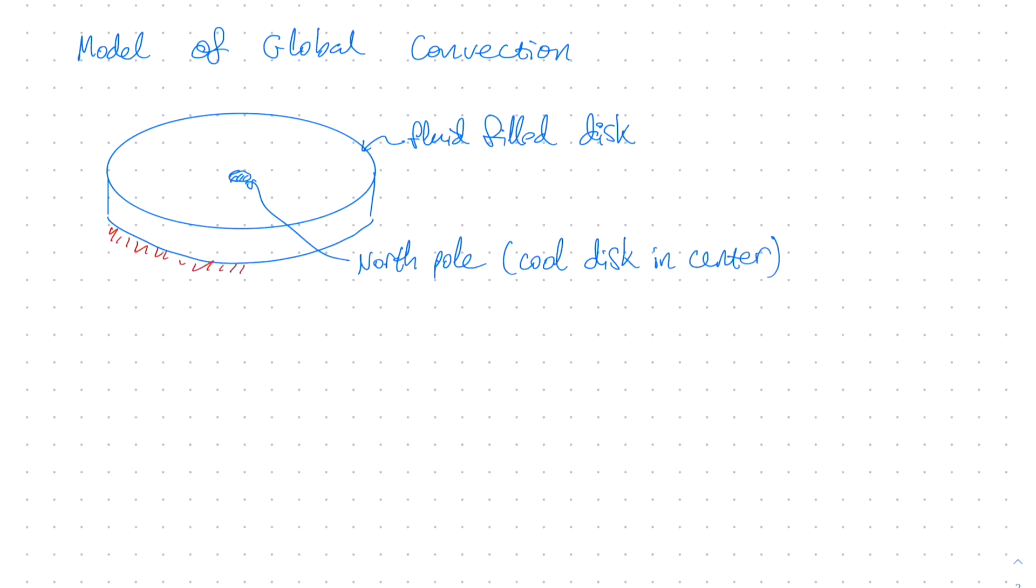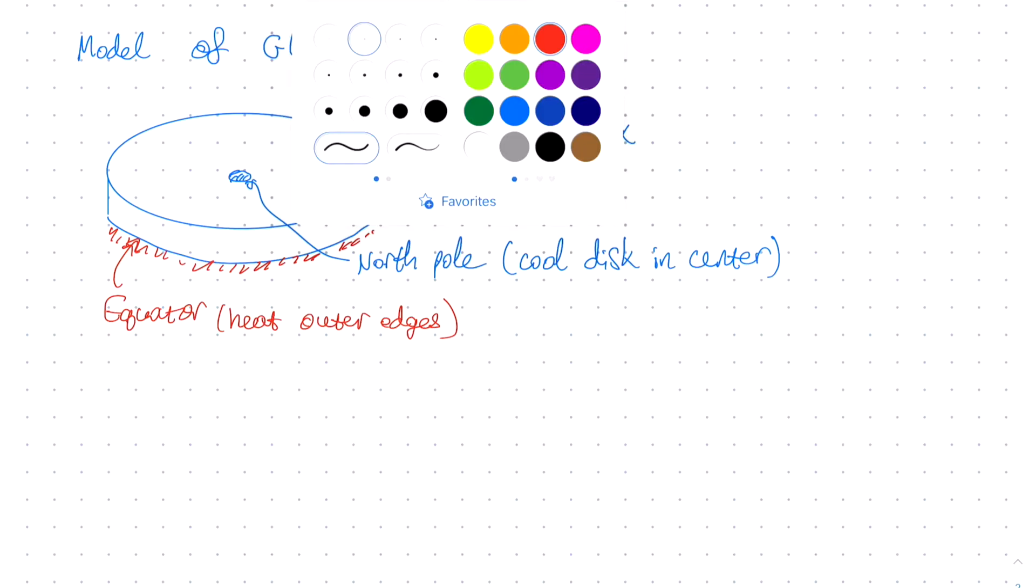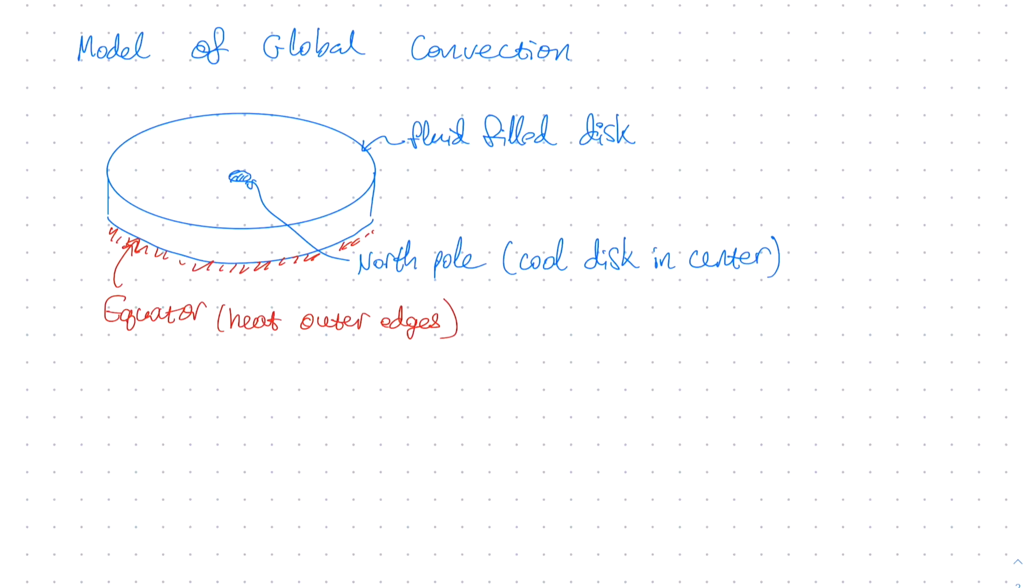To make this more relatable and easier to draw, instead of looking at global convection and circulation, let's look at a model of it. For a model, imagine that we have a Petri dish or some other kind of cylindrical dish, which is pretty shallow and filled with some sort of fluid like water. In order to simulate differential heating, under the disk we are going to place some elements. In the middle, we are going to place a cold element, for example, a little pack of ice. The ice pack simulates the lack of heating by the sun near the north pole of the Earth. What do we do with the outer edges of the disk? On the outside rim of the disk, that is supposed to be the equator, and we are going to heat that up.